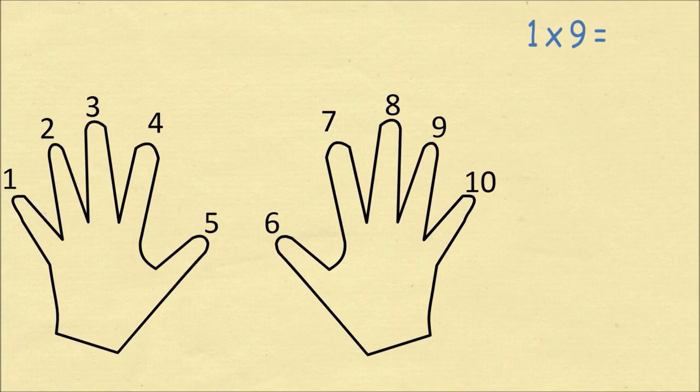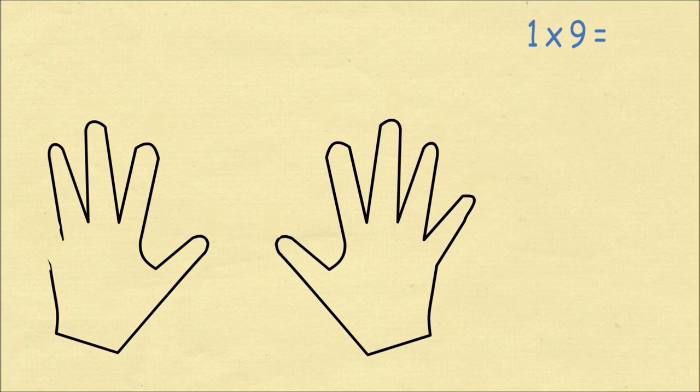For one times nine, we'll bend the first finger on our left hand. Now we count the number of fingers, there are zero fingers to the left of the bent finger and nine fingers to the right. So one times nine is nine.